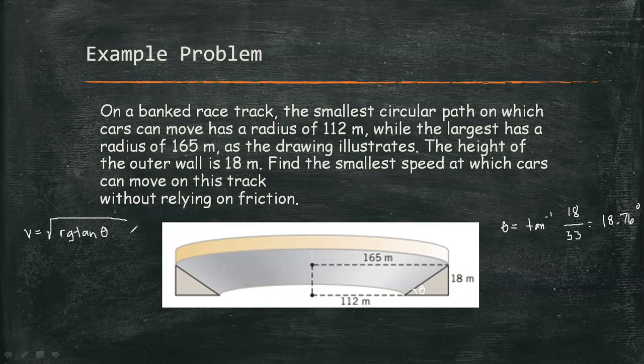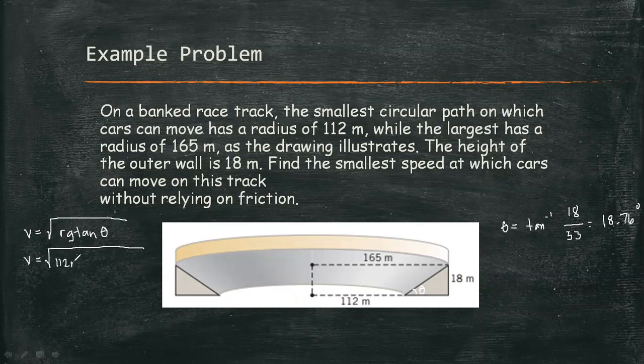As we can see in our formula, v² is equal to rg times tangent theta, and the velocity is proportional with the radius. Meaning as the radius increases, our velocity increases. Otherwise, if the radius is decreased, therefore our velocity decreases. So we can find the smallest speed at the lower part of the track which has a radius of 112 meters.